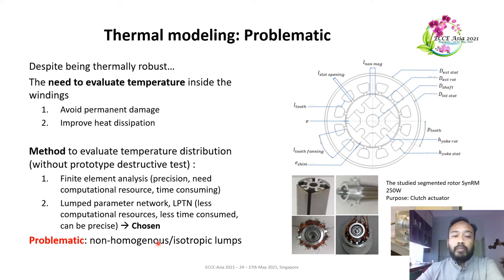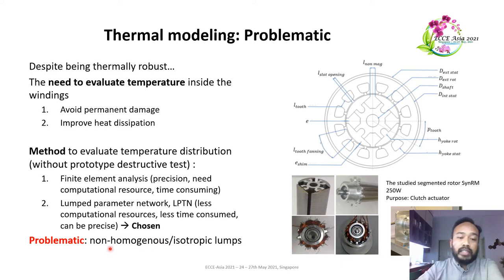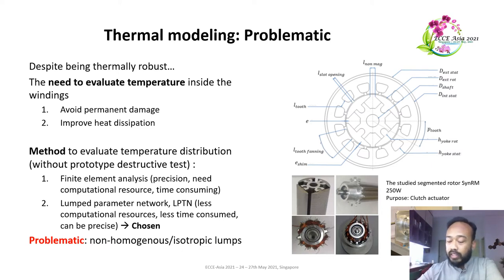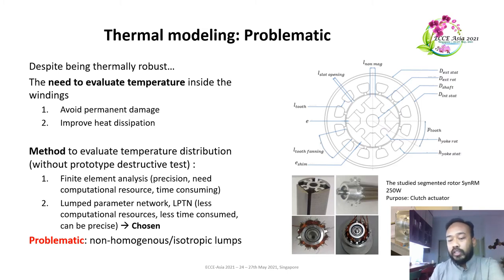Nonetheless, we still have the problematic that when we try to do the discretization of the machine to put them into lumps, several components are non-homogeneous and non-isotropic lumps. This is what we discuss in this paper: how do we do the modeling of those non-isotropic, non-homogeneous components.